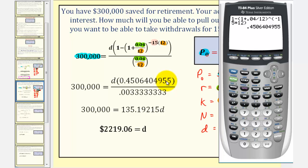This gives us this decimal here, and our denominator is going to be 0.04 divided by 12.